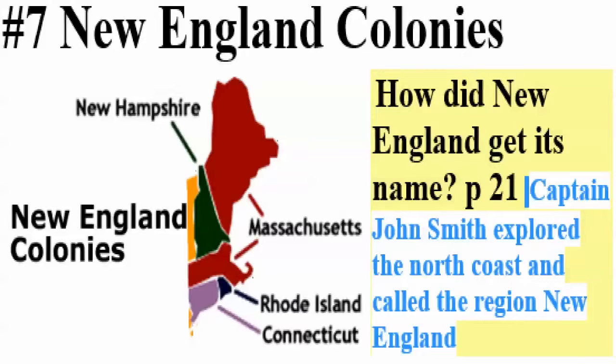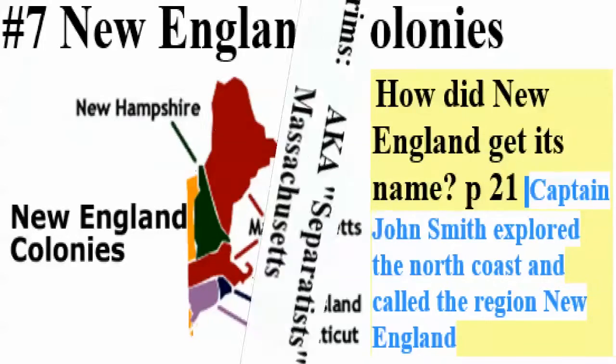John Smith traveled by boat up to New England, then went back to England and named this region. Captain John Smith explored the north coast and named it New England. When he got back to England he pointed on a map and said this area right here is New England. All European countries named their colonies after their own country — New England, New Spain down in Mexico, New France, New Amsterdam, New Netherlands — the 'New' part meant these were their new colonies.